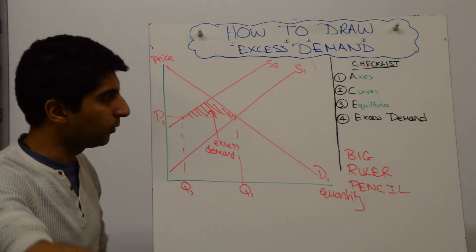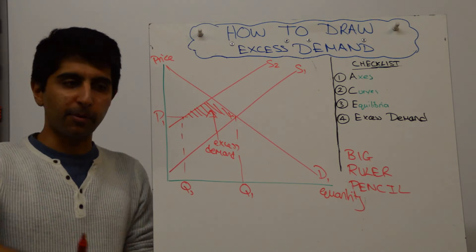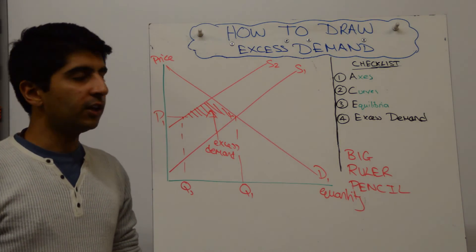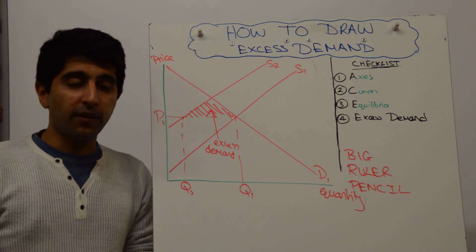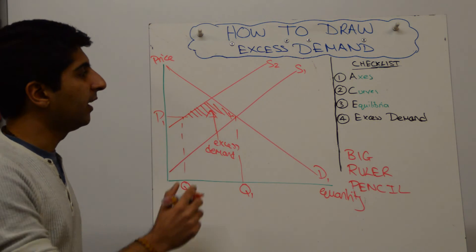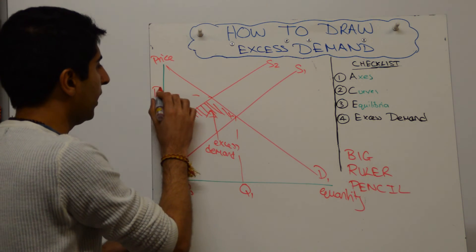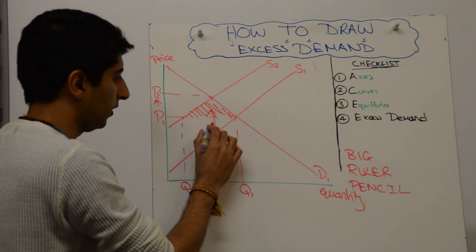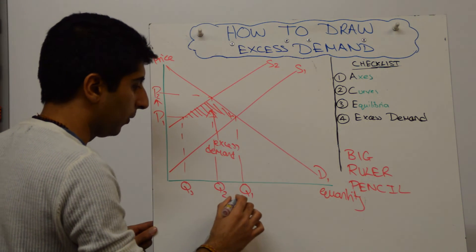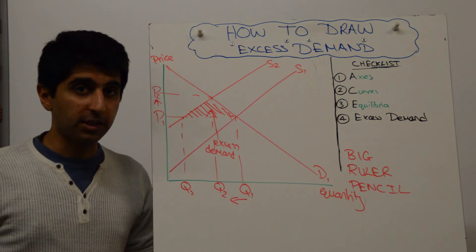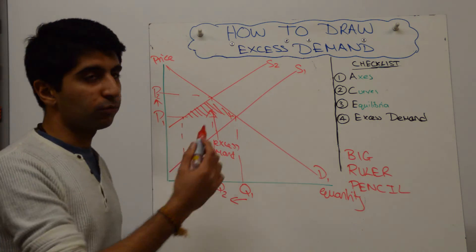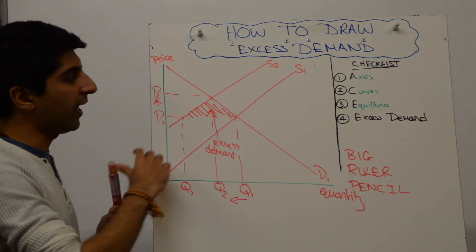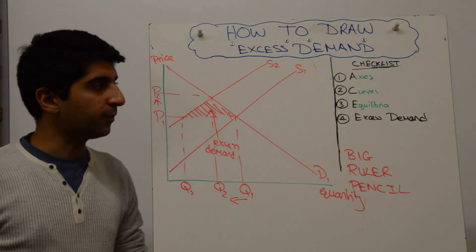Then Adam Smith's invisible hand gets to work and rations this excess demand by providing a signal to producers which lets them know that they can raise their price and make more profit. And eventually that will lead to a higher price of P2 and a lower quantity of Q2 compared to Q1. And that will ration the excess demand. But what you've shown there is the excess demand in the first place.